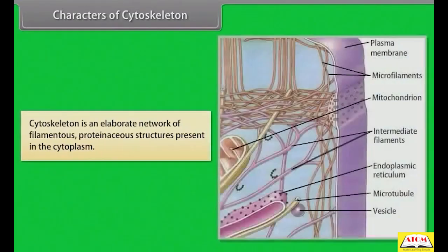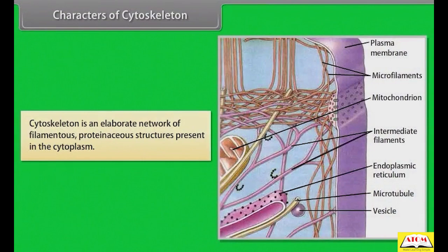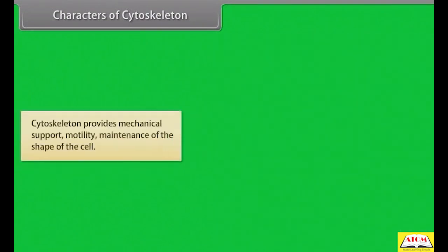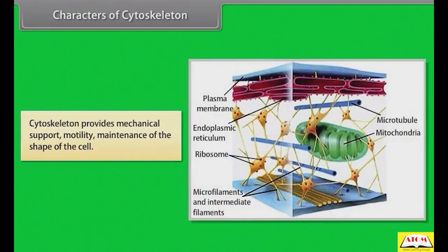Cytoskeleton is an elaborate network of filamentous, proteinaceous structures present in the cytoplasm. Cytoskeleton provides mechanical support, motility, and maintenance of the shape of the cell.